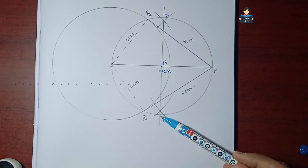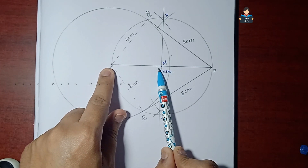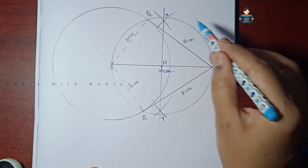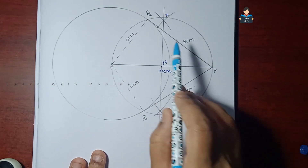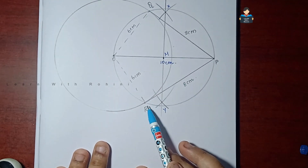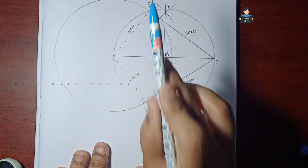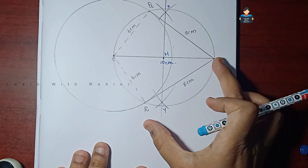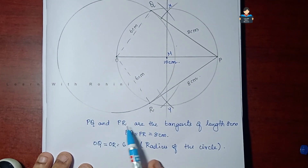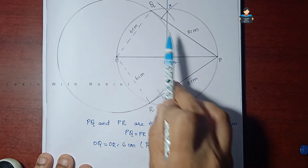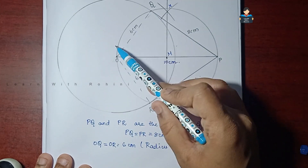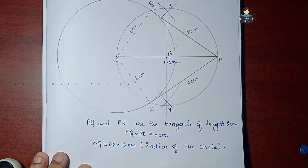In the two intersection points, O and M is the center point and we use a circle. This circle intersects at P and Q — that is, in the two circles we mark Q and R. So PQ and PR join — PQ and PR are the tangents of length 8 cm. That means OQ and OR are the radii of the circle, each 6 cm.